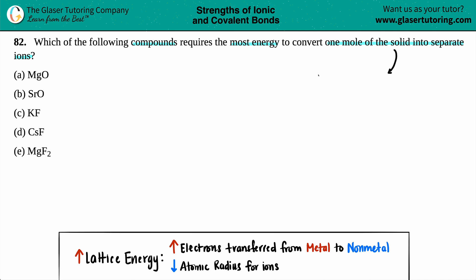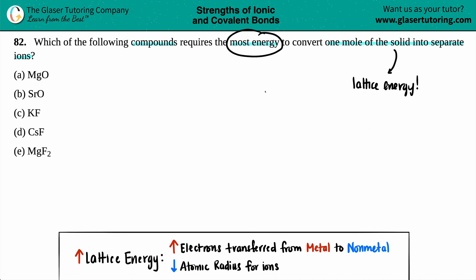By converting a solid into its ions, one of the phases it has to go through is lattice energy. All ionic compounds have a lattice energy. A lattice energy is the energy needed to take your compound in a gas phase and go to its ions in a gas phase. If you know which one would have a higher lattice energy, you would know the most energy required for the solid, because it's basically the same thing — breaking it into its ions.